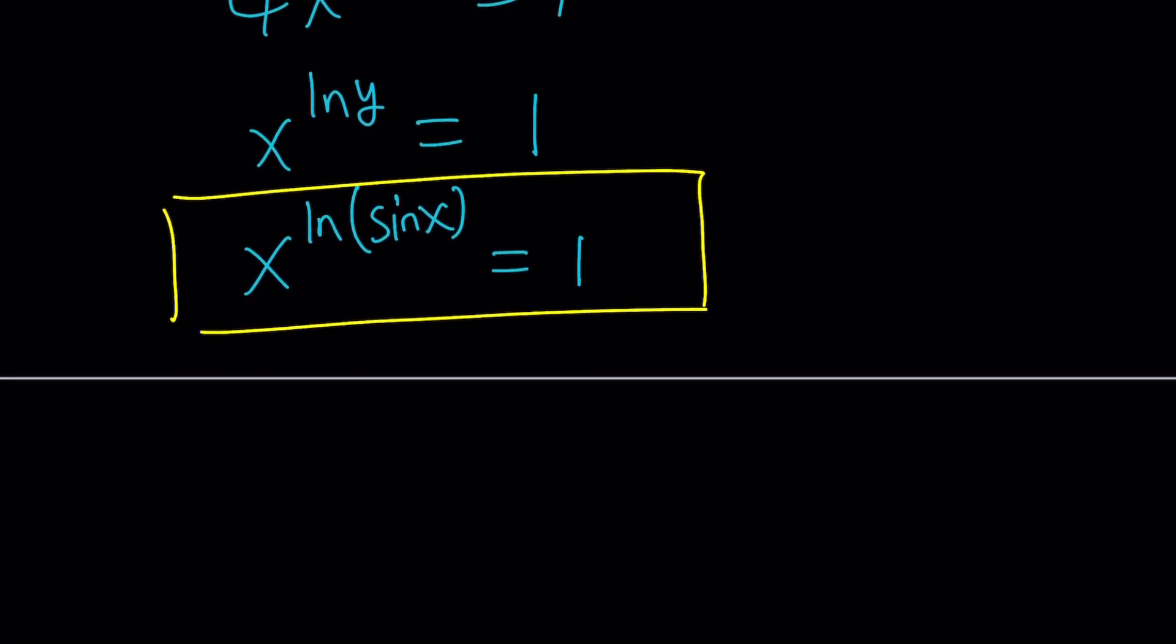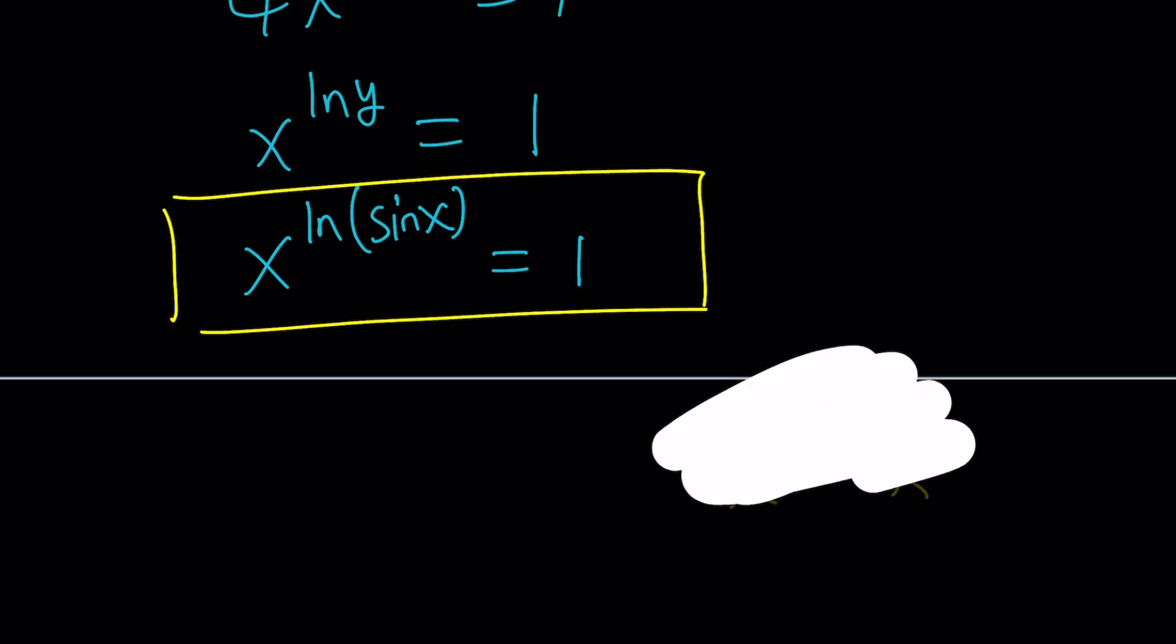So this is good because we got something equals 1, which is important for exponential equations. Sometimes you'll get a problem like x to the power x minus 3 equals x. You always want to set it equal to 1 by division. And of course, you have to consider x does not equal 0, so on and so forth. Or what happens if x is 0 as a separate case. But in this case, it's already 1, so we're good.